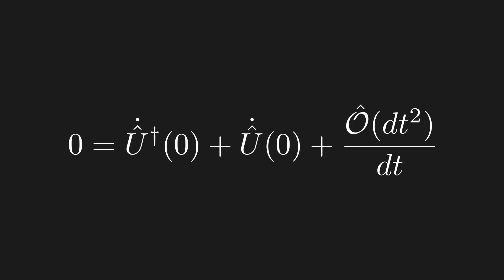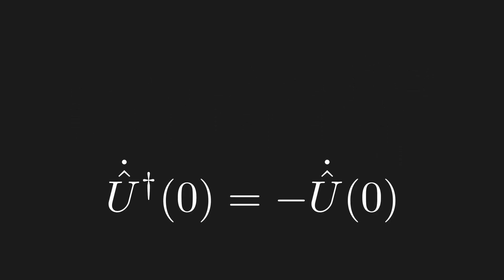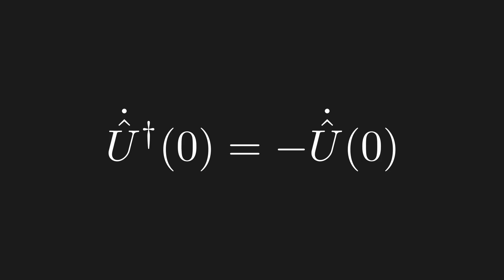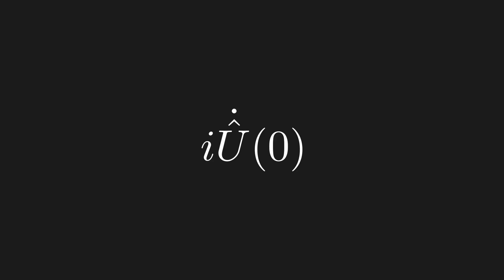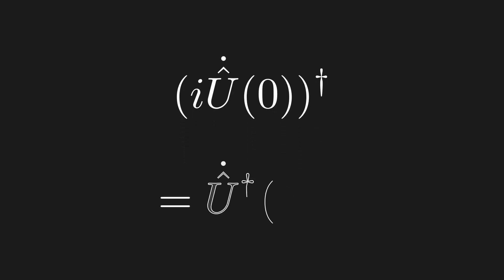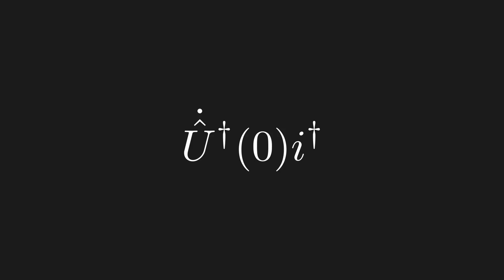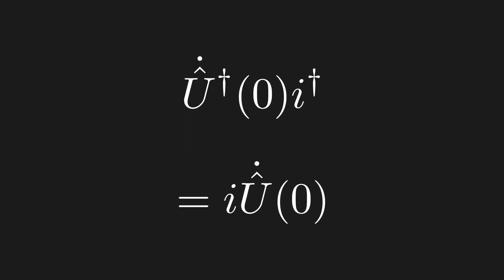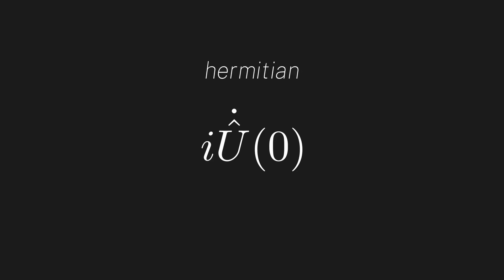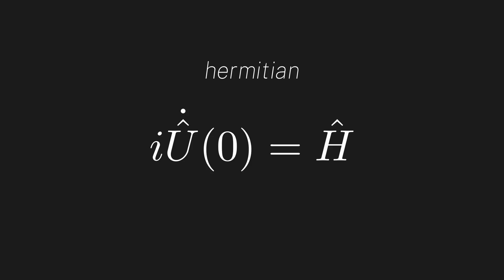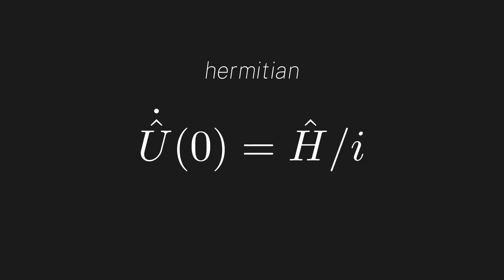Moving a term to the other side, we get that the Hermitian conjugate of U-dot equals the negative of U-dot — meaning the derivative of the time evolution operator is anti-Hermitian. Now let's multiply U-dot by i and take the Hermitian conjugate of the operator iU-dot. Using the product rule of Hermitian conjugates, since U-dot is anti-Hermitian and the Hermitian conjugate of i is −i, the two negatives cancel and we are left with iU-dot — which is exactly what we started with. So this operator is Hermitian, and we'll call it H. Dividing both sides by i, U-dot equals some Hermitian operator H divided by i.